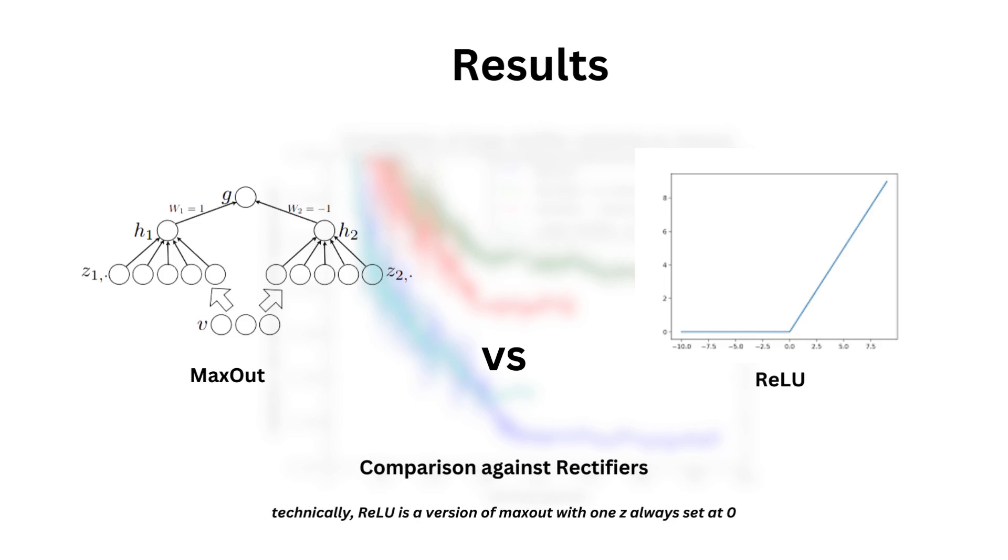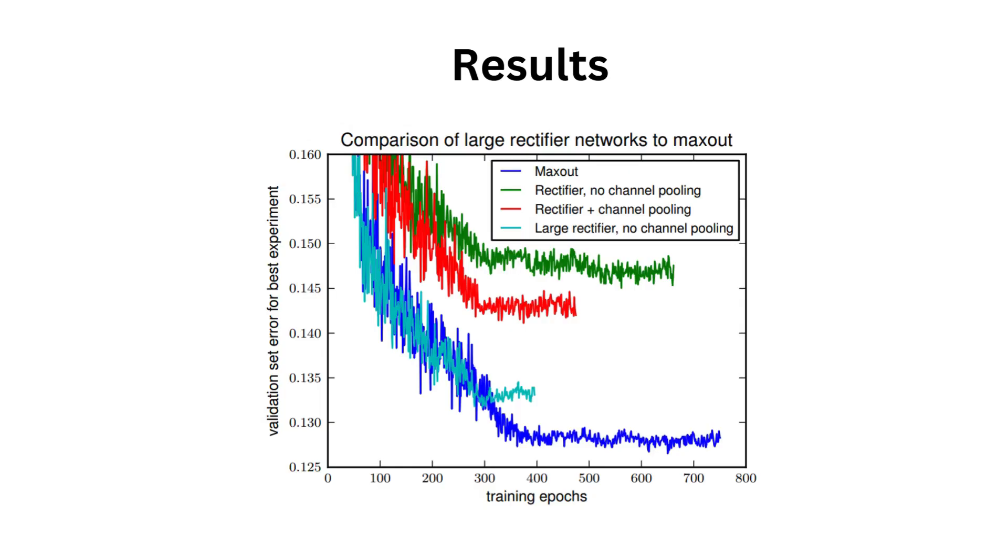Now, if you have been paying close attention, you might have realized that maxout units may have an advantage over ReLU because they can pack many more parameters in the same number of layers. The authors then decided to do a comparison study of maxout against rectifier network of multiple size. What they found was that maxout seemed to have better overall performance than multiple types of rectifier networks. The blue line here is better than the other ones.